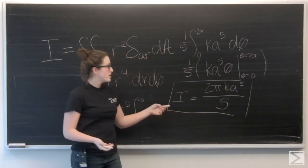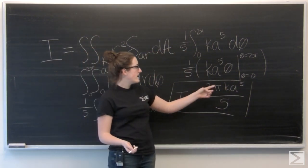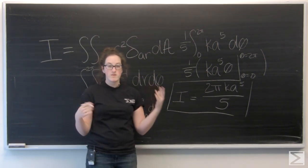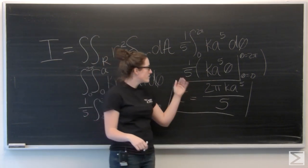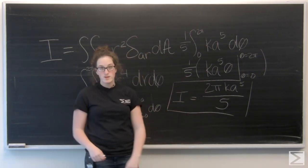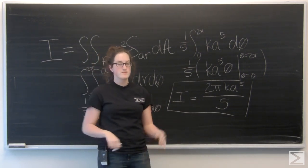So I get that my moment of inertia is 2 pi k a to the fifth over 5. And then if I was doing a specific problem, I would just have real numbers for k and a. But since we're not given anything other than variables, this is our answer. There we go. Thank you.